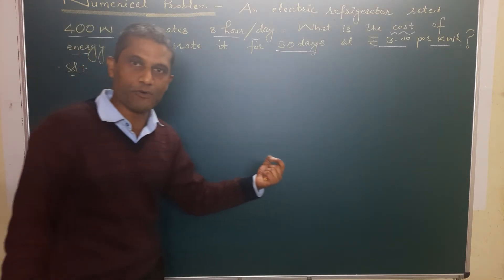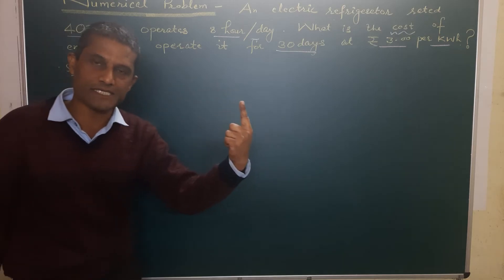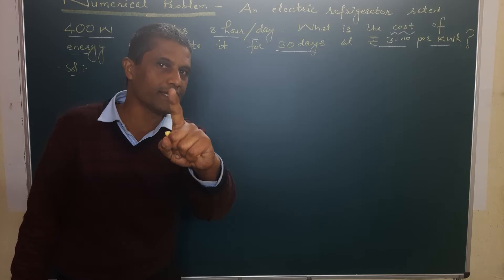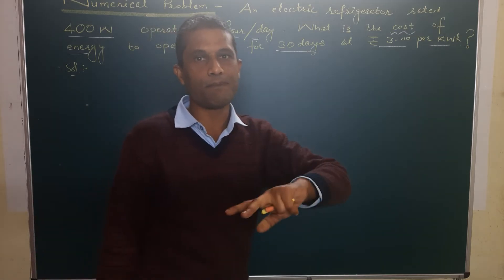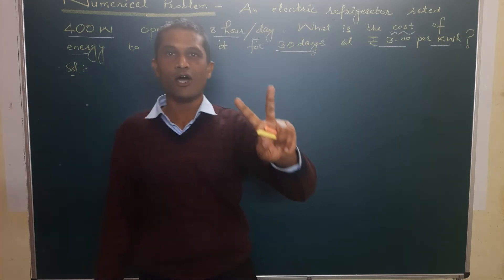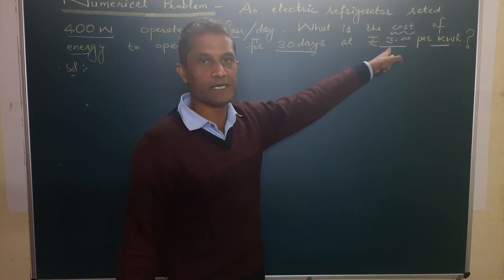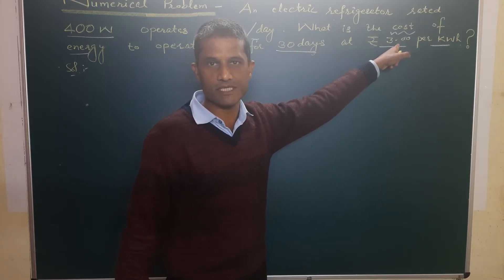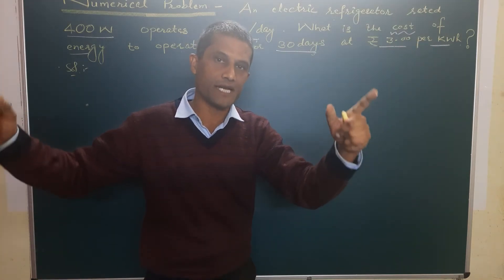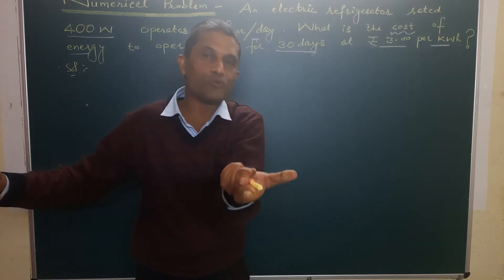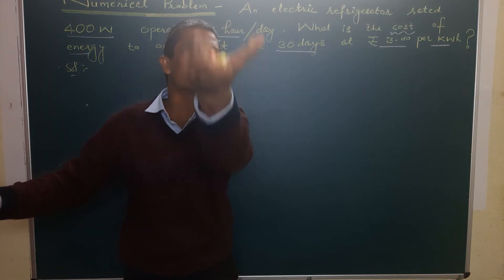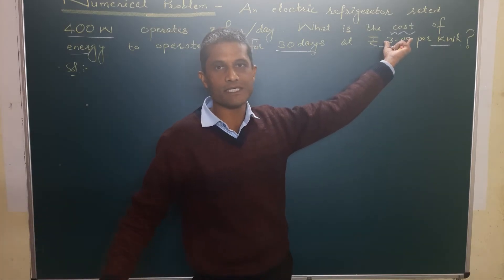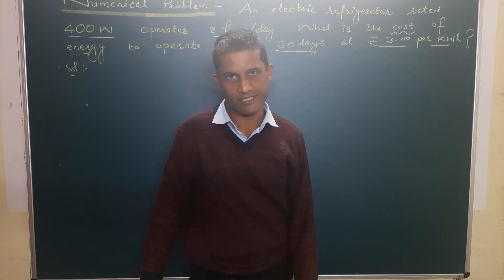So three steps: in the first step we find the electrical energy consumed for one day; in the second step we find consumption for 30 days; and in the final step, since the cost of one kilowatt hour is rupee 3, we multiply the total kilowatt hours consumed for 30 days by rupee 3 to get the required answer.